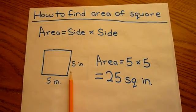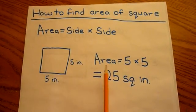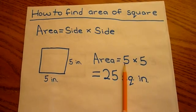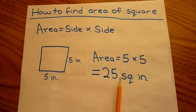So if one of the sides is 5 inches, all the other sides would be 5 inches also. So the area would be 5 inches times 5 inches, and that would equal 25 square inches.